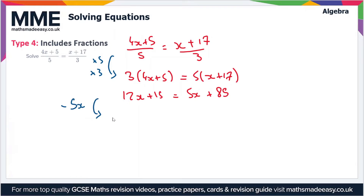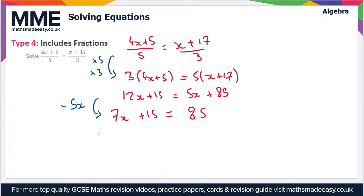12x minus 5x gives 7x, plus 15, is equal to 85 — we've removed the 5x from this side. The next step is to get the x terms on their own, so we subtract 15 from both sides.